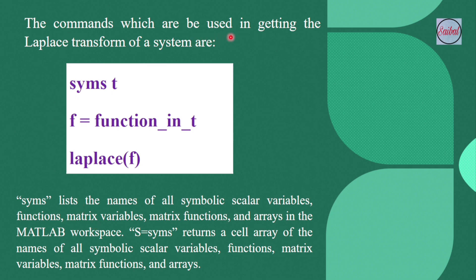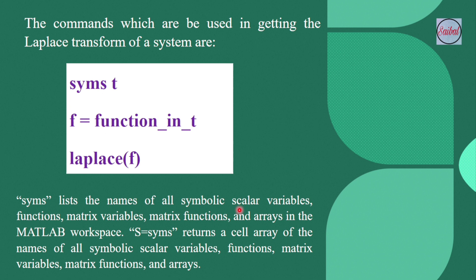The commands used for getting the Laplace transform of systems follow this basic syntax. Here you can see we are using SYMS with variable t, f equal to function in t. The command we generally use to perform the Laplace transform is Laplace of any function — we use f to denote the function of t, so we write Laplace of f. SYMS lists the name of all symbolic scalar variables, functions, matrix variables, matrix functions, and arrays in the MATLAB workspace.